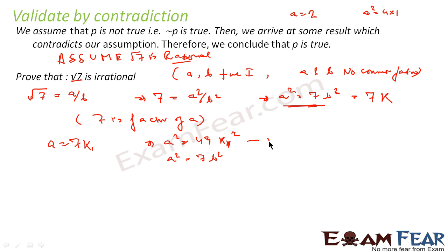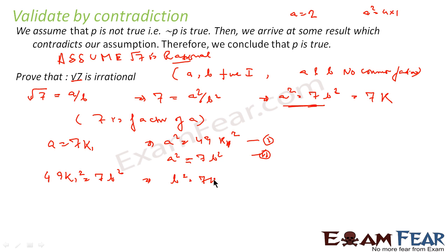We have two equations: a² = 49k₁² and a² = 7b². Since the left-hand sides are the same, the right-hand sides are equal too. So 49k₁² = 7b², which gives b² = 7k₁². We can call k₁² some constant k₂, so b² = 7k₂. From this, since 7 is a prime number and 7 is a factor of b², we can say that 7 is a factor of b.